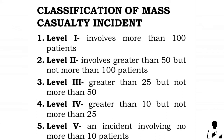Classification of mass casualty incidents: Level 1 involves more than 100 patients. Level 2 involves greater than 50 but not more than 100 patients. Level 3 involves greater than 25 but not more than 50. Level 4 involves greater than 10 but not more than 25. Level 5 involves no more than 10 patients.